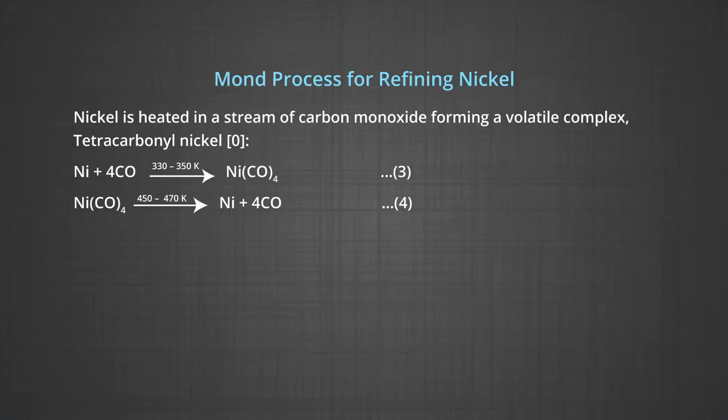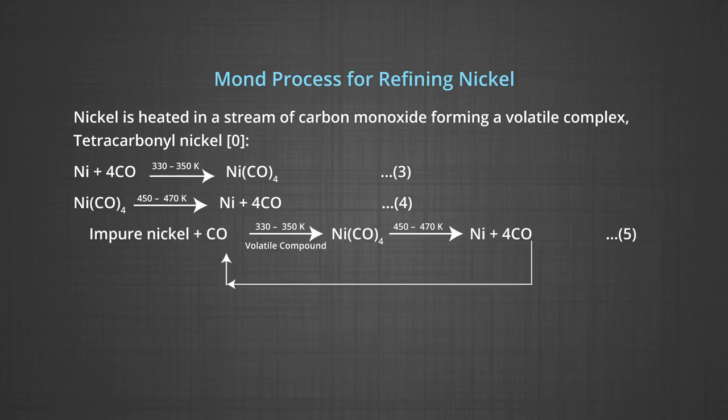The carbonyl is subjected to higher temperature, so that it is decomposed giving the pure metal. Nickel tetracarbonyl, when heated to 450 to 470 Kelvin, decomposes to give nickel and carbon monoxide.